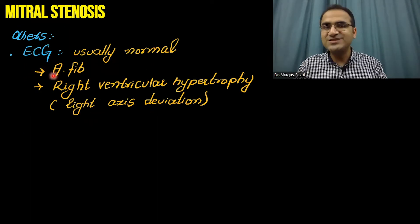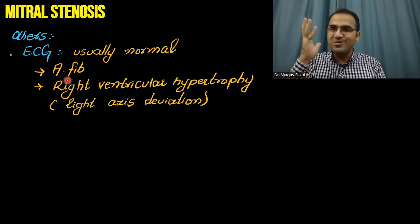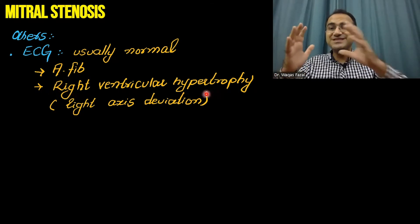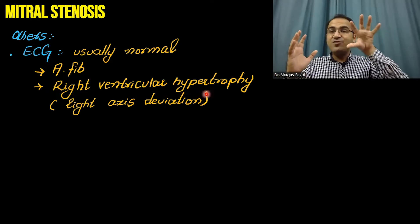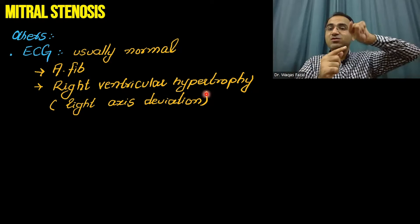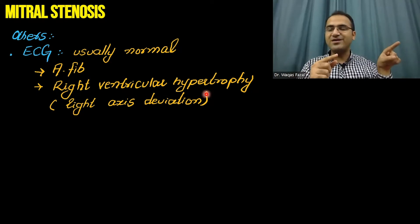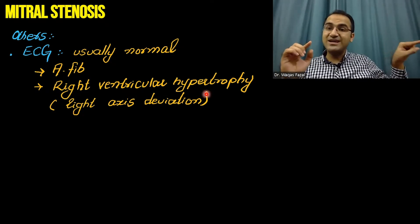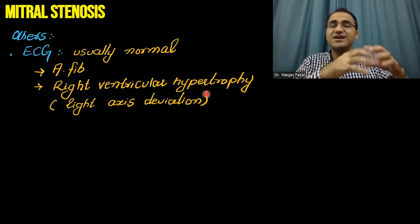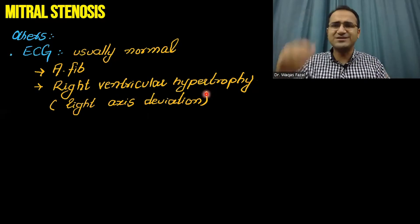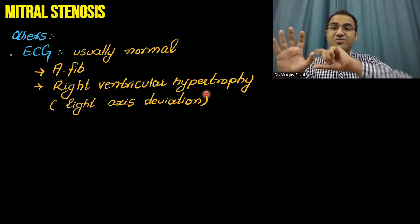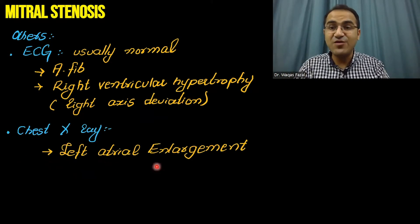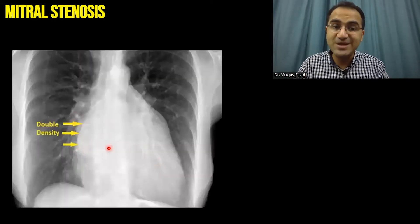If you do an ECG in these patients, you would find irregularly irregular rhythm — you will see atrial fibrillation. You can also find right ventricular hypertrophy, since the blood is being backed up in the lungs. Whenever blood is backed up in the lungs, there will be pressure on the right ventricle, resulting in cor pulmonale and right heart failure in later stages — the left-sided heart problem leads to right-sided heart failure. On the chest X-ray, you will see left atrial enlargement appearing as a double density sign.